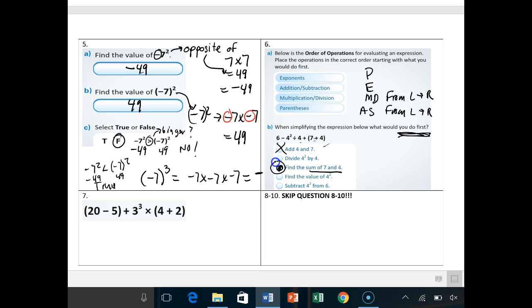All right? So then number 7 is the last one you're actually going to do on this one. And you have an order of operations problem. So you have 20 minus 5. And you have to use post-it notes on this. Use post-it notes. Do parentheses first. Notice you have two parentheses. So you can do them both at the same time. So this is 15 plus 3 cubed times. And you can do this one. 6.